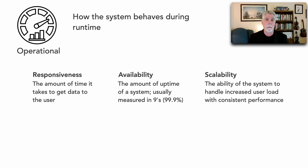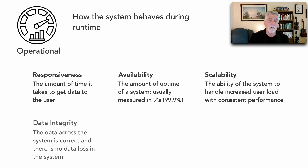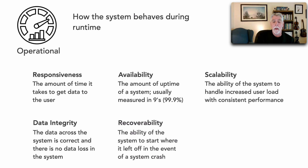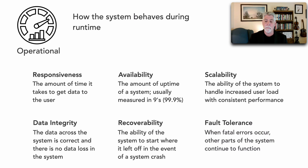Scalability is a very common operational characteristic — the ability of the system to handle increased load with consistent response time, performance, and error rates. Also data integrity, which describes that the data across the system is correct and in sync, and that there's no data loss. Recoverability is important in many systems — the ability of the system to start where it left off after a crash. Another good example is fault tolerance: when a fatal error occurs, other parts of the system continue to run, and how fast we can respond and correct that error.